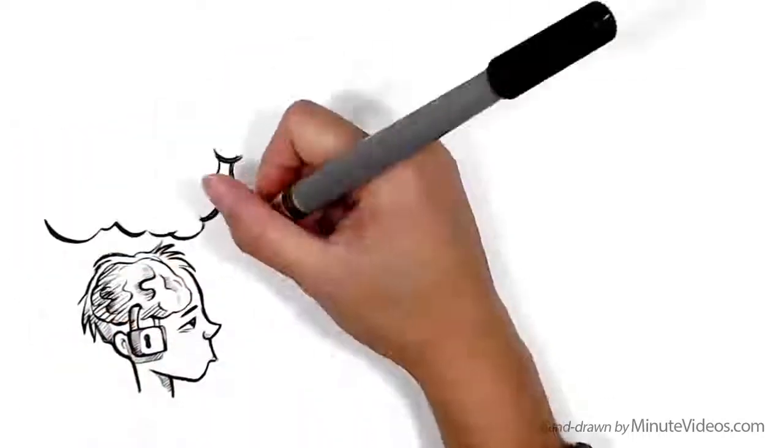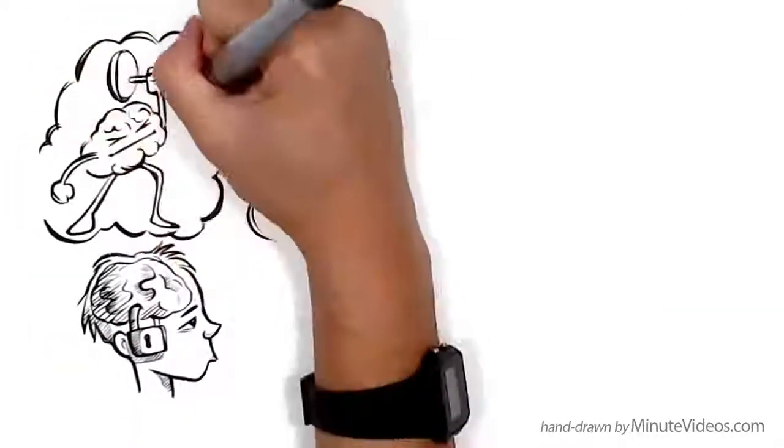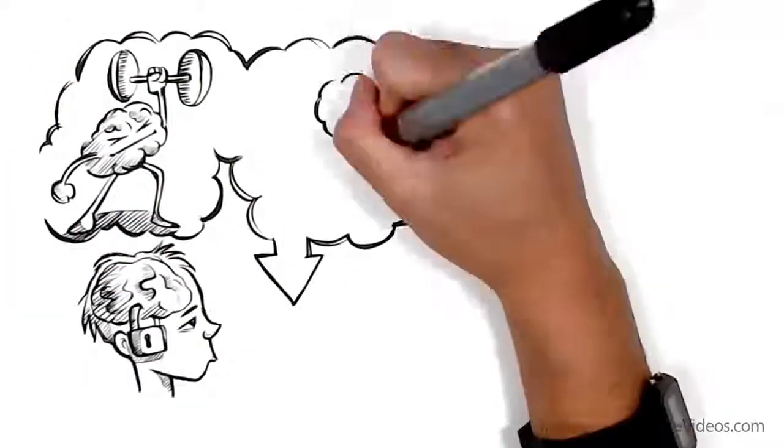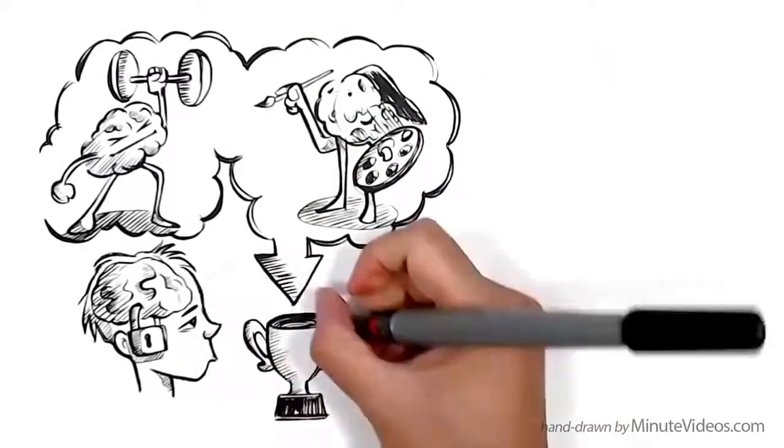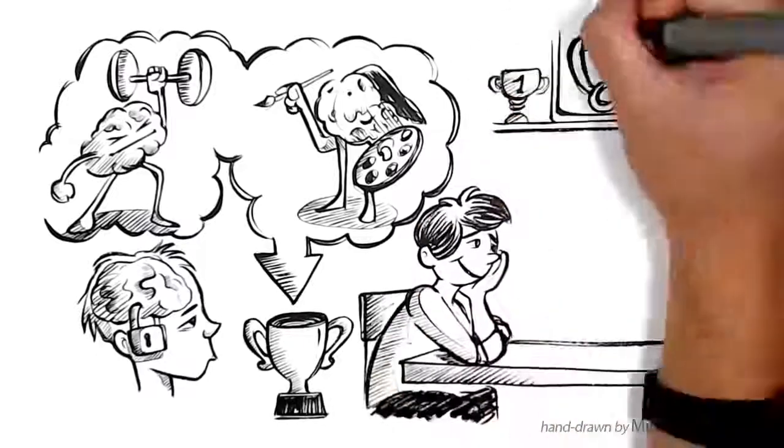People have a fixed mindset because they believe that basic qualities, like intelligence or talents, are fixed traits, and that these traits are responsible for success. They often like to document past achievements.